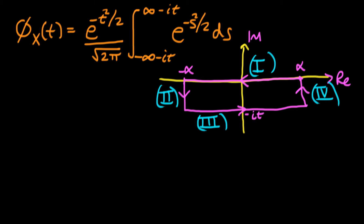We're nearly through in our derivation of the characteristic function for a normal random variable. In the last video we derived this result at the top, and we spoke about how we need to evaluate this integral, which we have in that result.